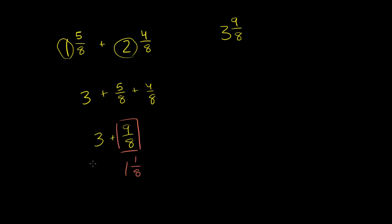So this is the same thing as 3 plus 1 and 1/8. So now we can add the whole number parts. 3 plus 1 is equal to 4, and then you have your 1/8 over there, 4 and 1/8. I just wanted to give you that special circumstance when your fraction part ends up improper.